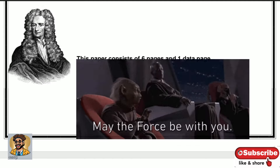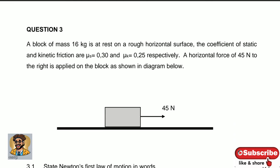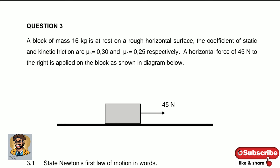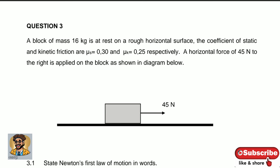This is for grade 12, however Newton's Law starts in grade 11, so it's a very good question to practice. The question says: a block of mass 16 kg is at rest on a rough horizontal surface. The coefficient of static and kinetic friction are 0.3 and 0.25 respectively. A horizontal force of 45 N to the right is applied on the block as shown in the diagram.